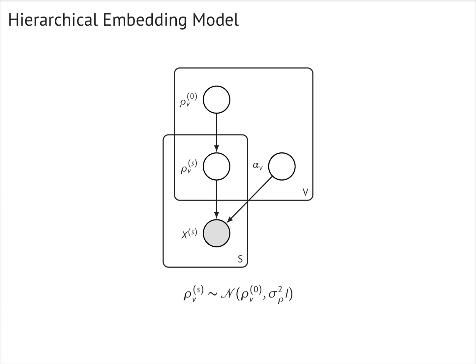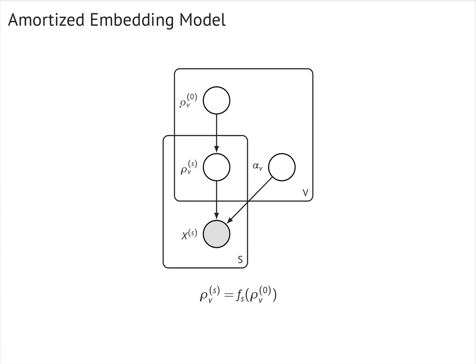With a separate set of embeddings for each group, the hierarchical embedding model has many parameters. An effective way to reduce the number of parameters is amortization. In the amortized embedding model, the group-specific embeddings are a deterministic function of the global embeddings.